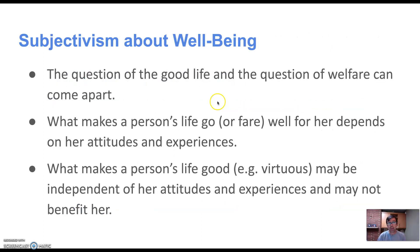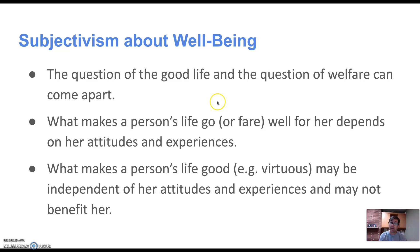Coming back to this debate between subjectivists and objectivists: the subjectivist believes that when I think about the goodness of my life, that can be measured in ways distinct from objective welfare. What makes my life better for me — Heathwood thinks — is distinct from what objectively makes my life better. So what makes a person's life go well depends on my attitudes, my beliefs and desires, my felt experiences. Whereas what makes a person's life good in a more objective sense, like being virtuous or courageous, may be independent of my beliefs and desires.